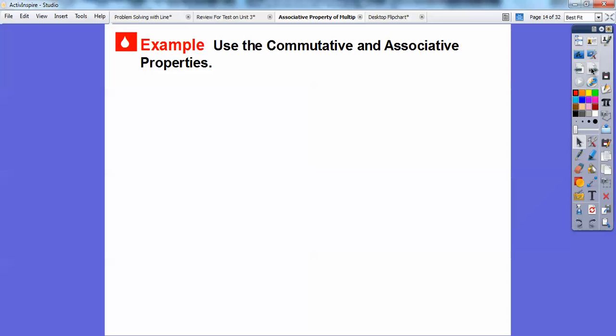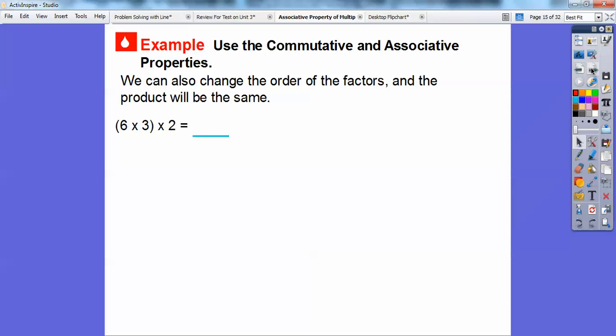So I'm going to remind us what commutative property means and associative property. Commutative property is like when I commute to work, I drive my truck to work. So numbers sometimes commute around on a multiplication sign. So here we're going to do 6 times 3 times 2, and we're going to change the order of the factors, and the product will be the same.